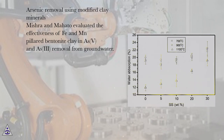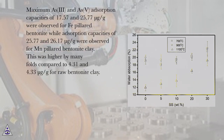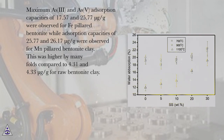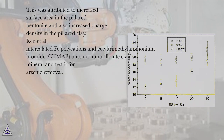Arsenic Removal Using Modified Clay Minerals. Mishra and Mahato evaluated the effectiveness of Fe and Mn-pillared bentonite clay in As(V) and As(III) removal from groundwater. Maximum As(III) and As(V) adsorption capacities of 17.57 and 25.77 mg/g were observed for Fe-pillared bentonite, while adsorption capacities of 25.77 and 26.17 mg/g were observed for Mn-pillared bentonite clay. This was higher by many folds compared to 4.31 and 4.33 mg/g for raw bentonite clay, attributed to increased surface area and increased charge density in the pillared clay.